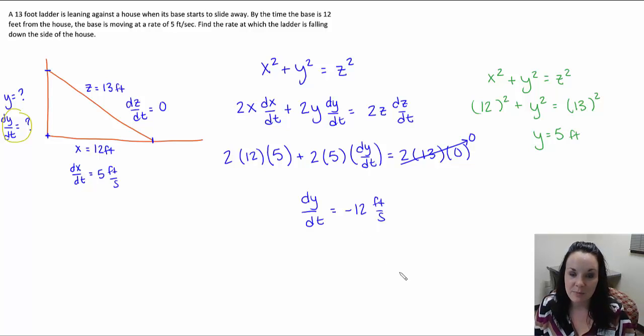So with these related rates problems, draw a picture. It's often helpful. Start labeling everything that you know, and then figure out an equation that relates everything. Go ahead and differentiate implicitly that equation with respect to time, plug everything in and solve for the unknown variable. Good luck.